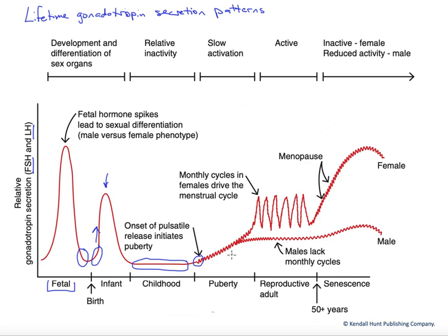Now we're really going to activate the development of secondary sex characteristics. We're going to slowly become reproductively active as those structures become mature and begin producing gametes — the eggs, oocytes, and sperm — sort of late in puberty here.